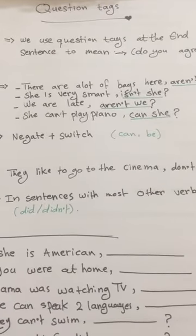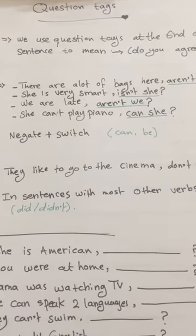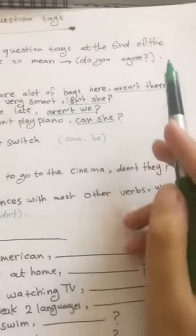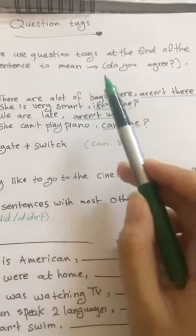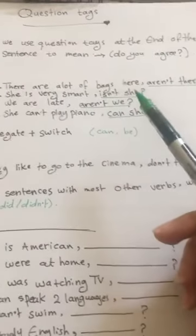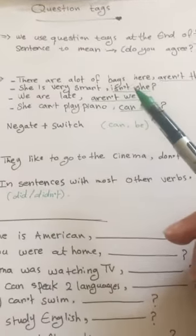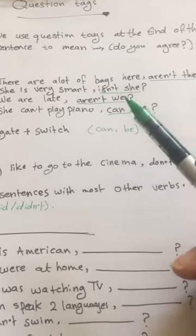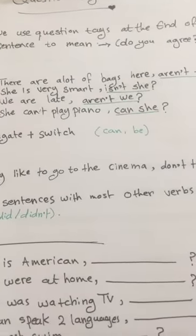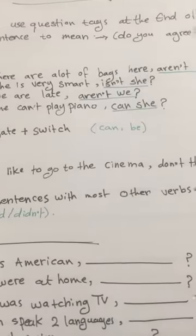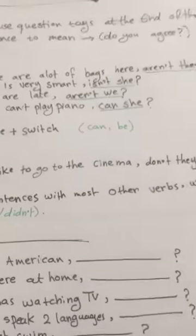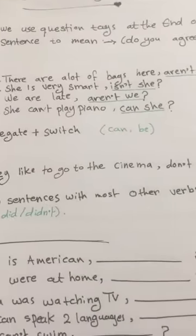So when do we use the question tags? First, we use question tags at the end of the sentence to mean 'Do you agree?' or 'Am I right?' It's the question tag at the end of the sentence. Do you agree with the thing that I have just said? Am I right?